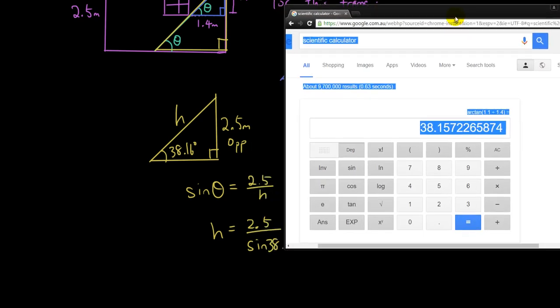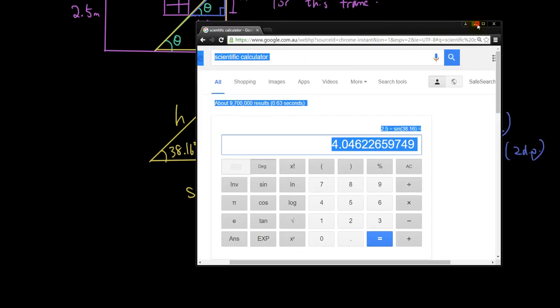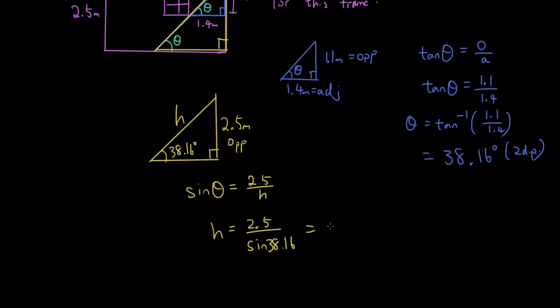So I have 2.5 divided by sine 38.16. And what's the answer? 4.05, round it to 2 decimal places. So it's 4.05 meters.